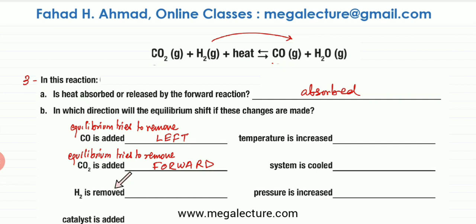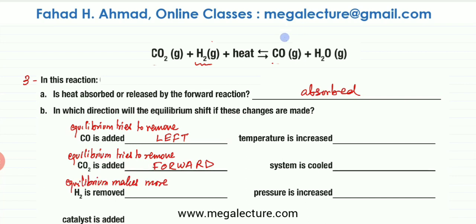The next part is that H2 is being removed. If you remove H2, the equilibrium is going to try to make more H2. The way more H2 could be produced is if the backward reaction is favored and the products get converted back to produce more H2. So the equilibrium shifts to the left.